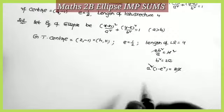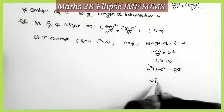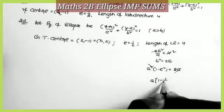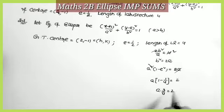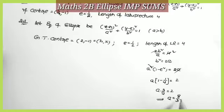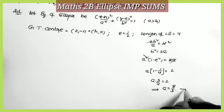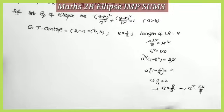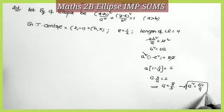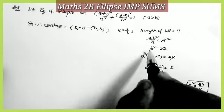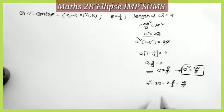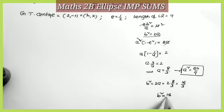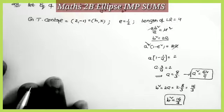Substituting e = 1/2: a²(1 − 1/4) = 2a → a²(3/4) = 2a → a(3/4) = 2 → a = 8/3. Therefore a² = 64/9. For b²: b² = 2a = 2 × 8/3 = 16/3.